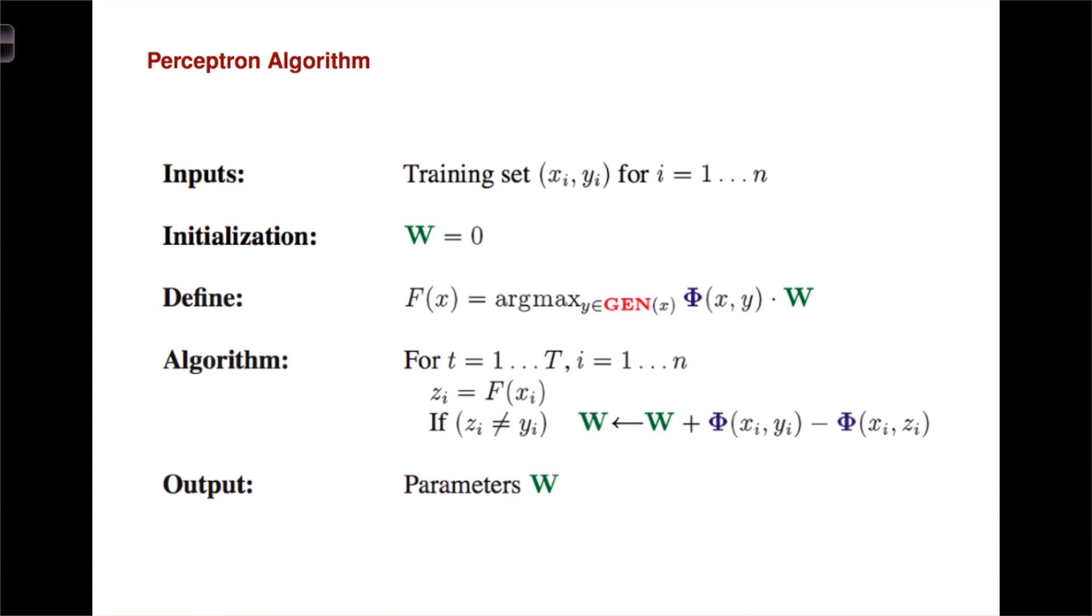And so if we get the answer right, we do nothing. If we don't get it right, what we're going to do is we're going to take the feature vector of the true label sequence and subtract out the feature vector of the label sequence we predicted through our function f. And then at the end of the day, we output our parameters w as usual.